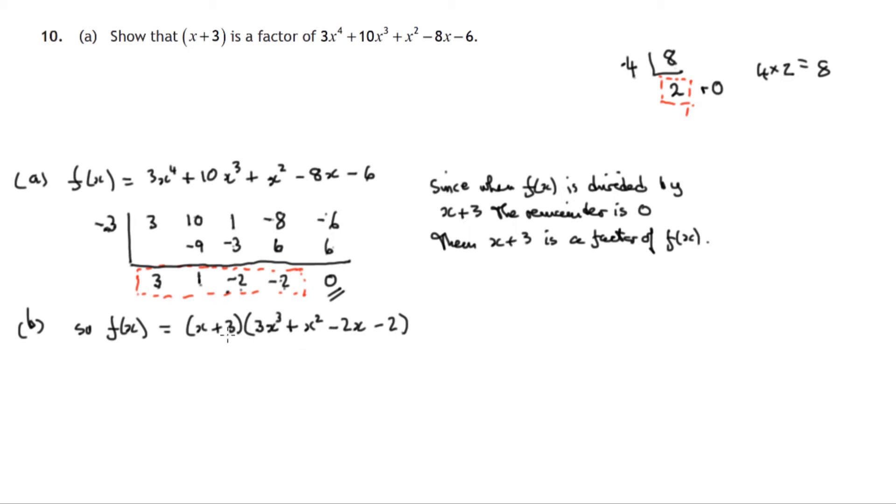So x plus 3 was a factor of this and it goes this number of times. 4 is a factor of 8 and it goes 2 times. 4 times 2 is 8. x plus 3 times this gives me this original polynomial. Now it says factorize fully in part b. I haven't shown you part b. There it is.